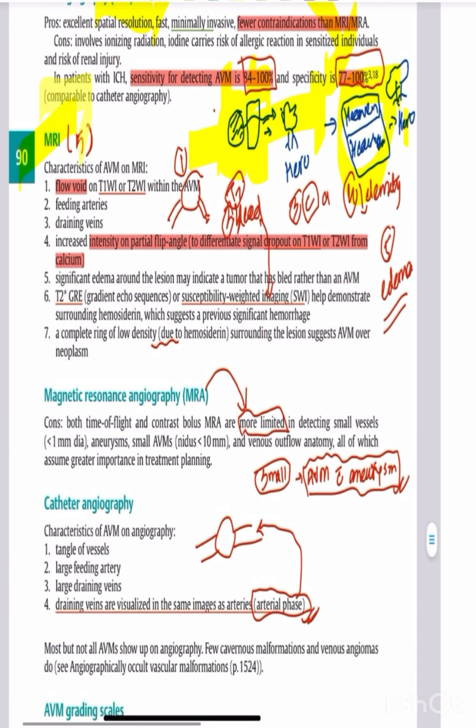MRI can show the AVM, feeding arteries, and draining veins. It can detect hemorrhage using SWI or T2-star imaging, and can show hemosiderin and calcium deposits.